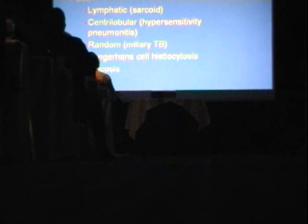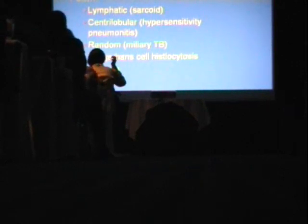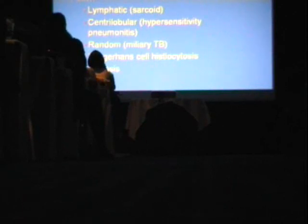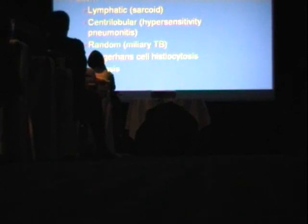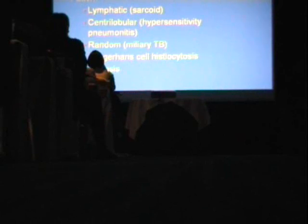Now let's talk about the nodule pattern. On HRCT you can break nodule patterns down by anatomic location. Are they around the lymphatics, such as sarcoid along the bronchovascular bundles or subpleural? Are they centrilobular, in the center of the secondary pulmonary lobule — classic examples being hypersensitivity pneumonitis? Are they random, as in hematogenously seeded disease like miliary TB? Or patterns like Langerhans cell histiocytosis and silicosis, which don't quite fit the usual categories.